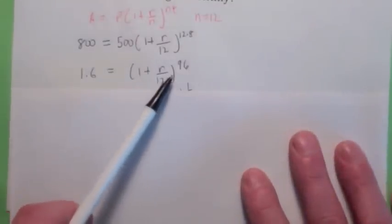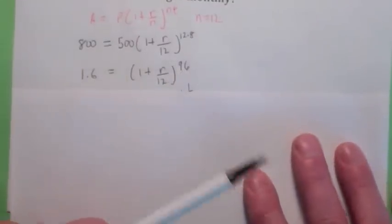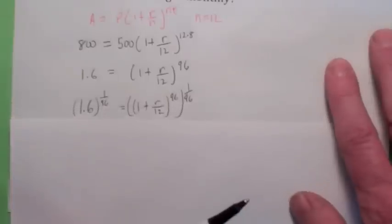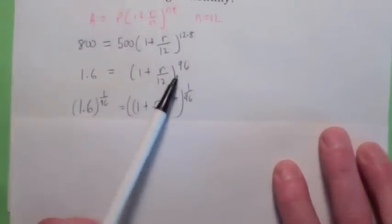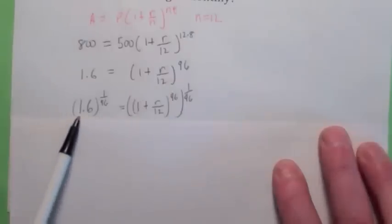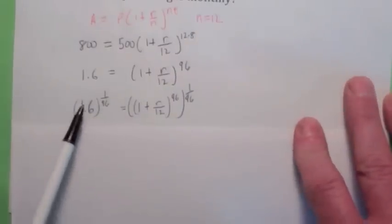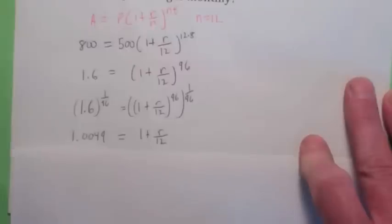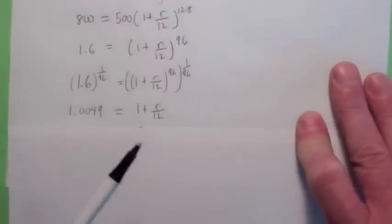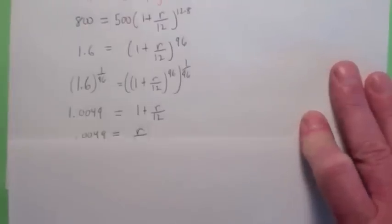Now we're tempted to take the log of both sides, but actually in this particular problem, you don't want to do that. The way you solve this equation, this is a power, right? Let's just raise each side to the 1 over 96 power. That's the best way to solve a power equation. Raise each side to the 1 over 96 power. I bet you haven't done that for a while. On the left side you get 1.6 to the 1 over 96. On the right side you just get 1 plus R over 12. So that's the key trick there. Now if you subtract 1, you get this. Multiply by 12, you get this. So the interest rate would have to be 5.9%.